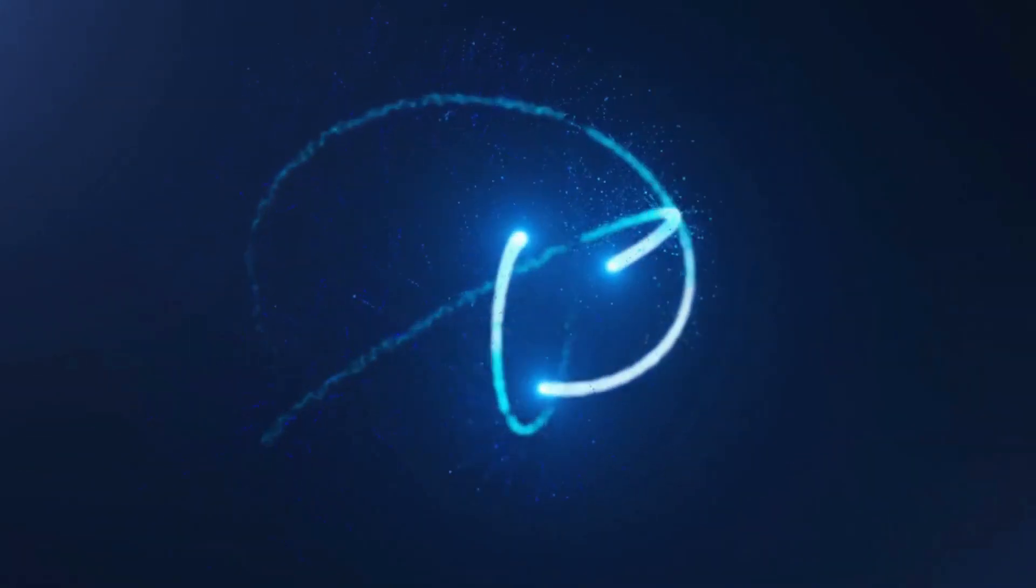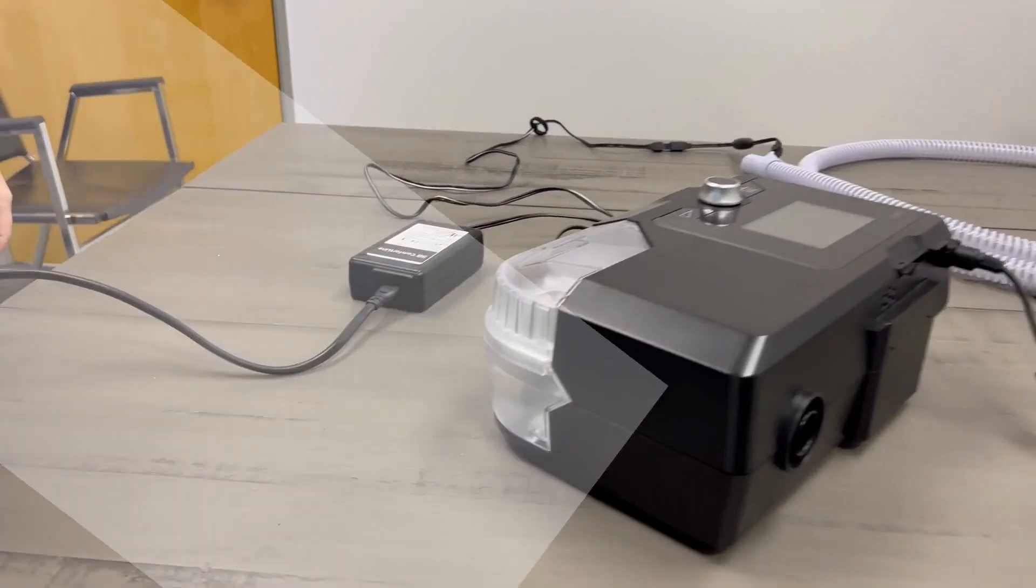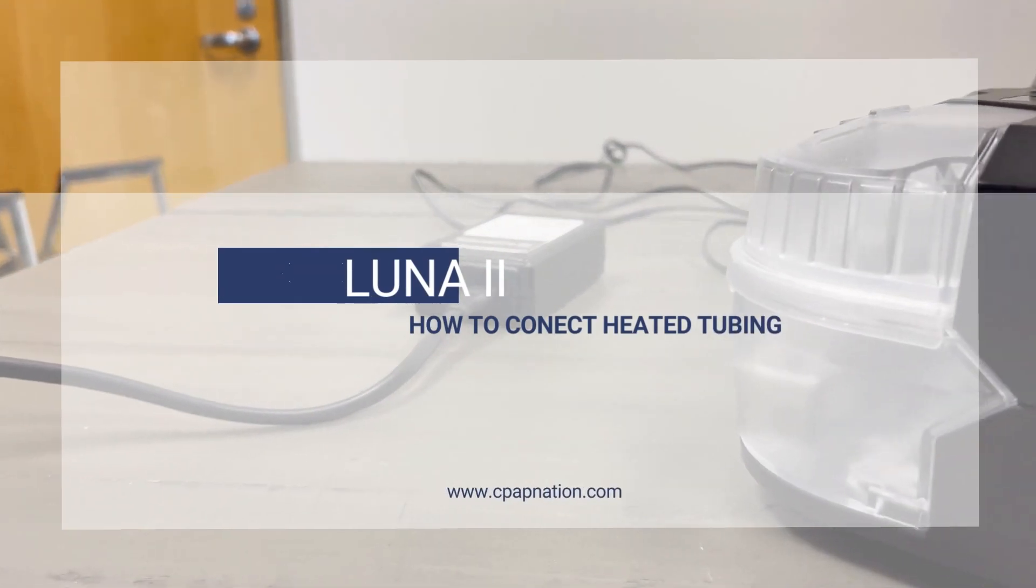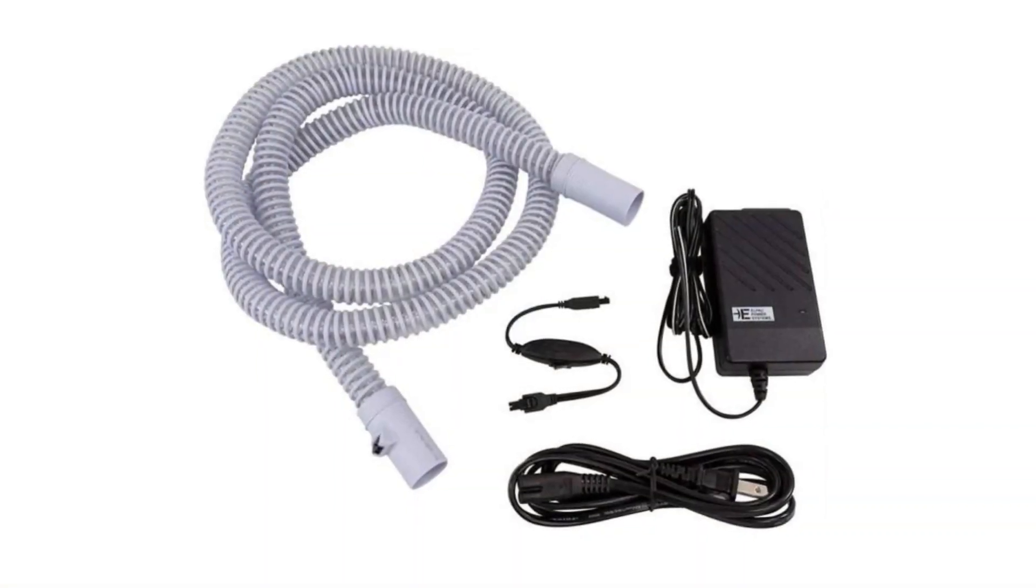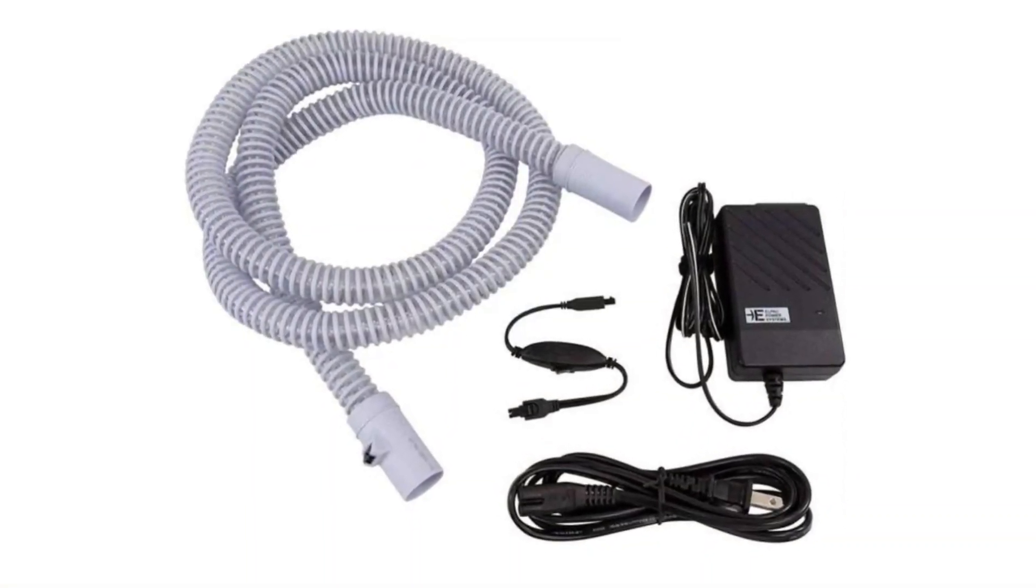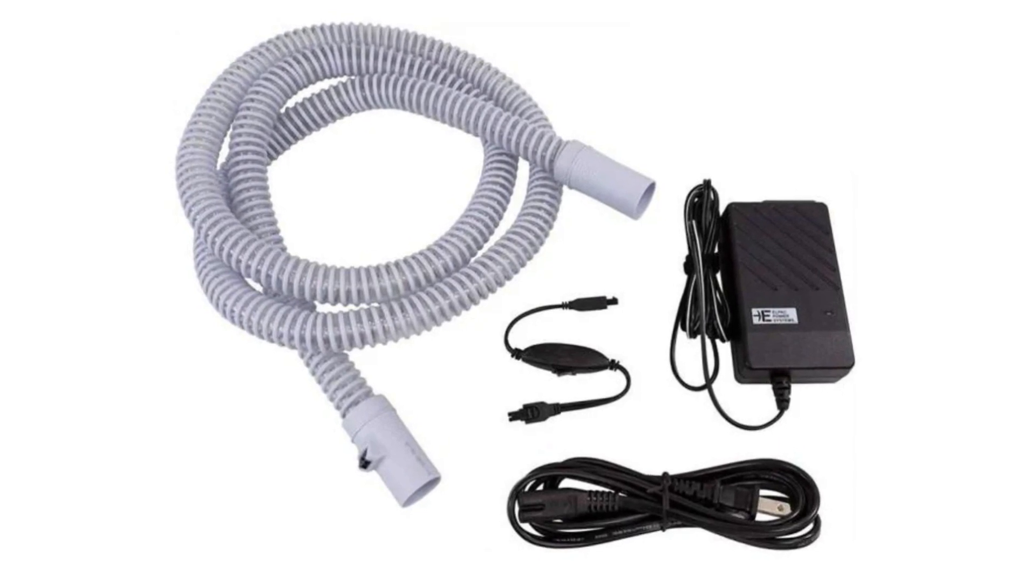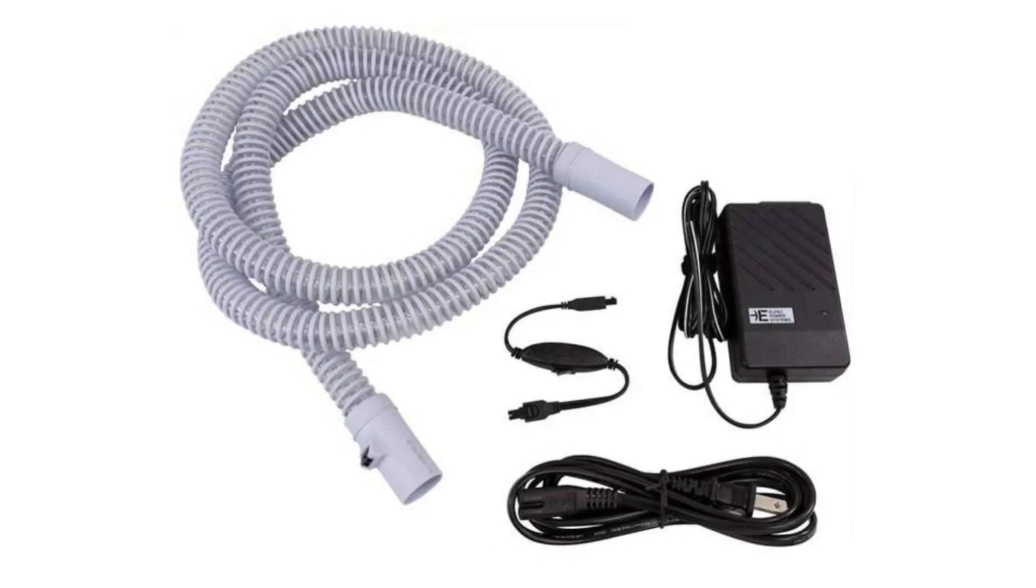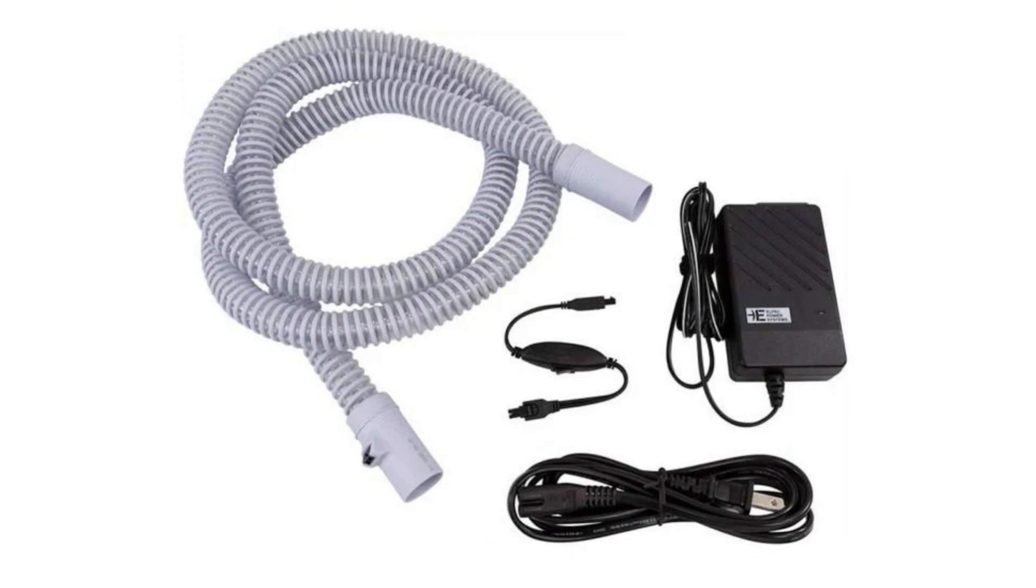Let's get you familiar with your 3B Luna 2 Auto CPAP heated tubing. When you take it out of the package, you will find that it includes the tube itself, the heated tubing power adapter, power cord, and power source.